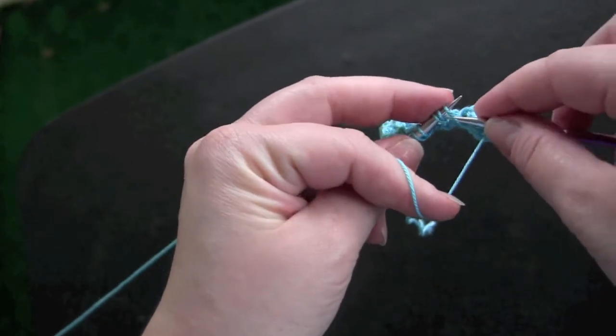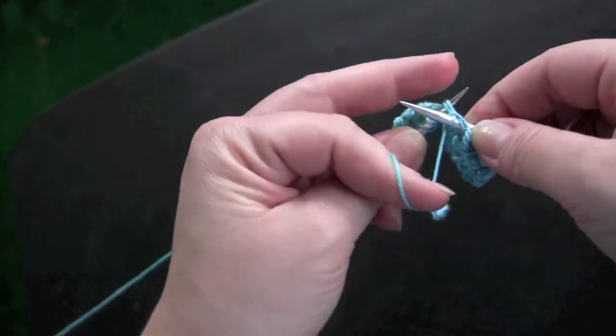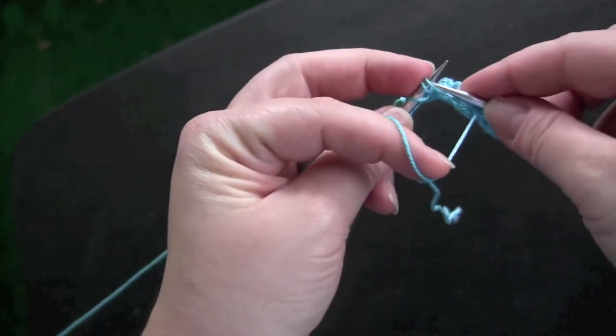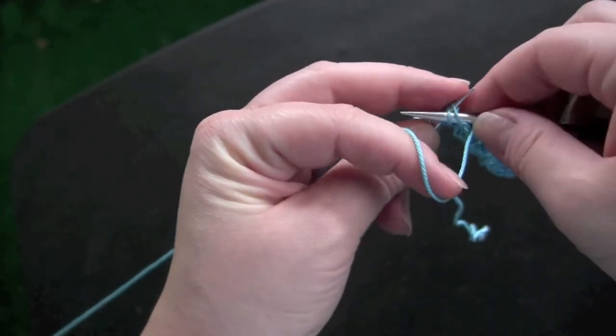I guess it may be more appropriate to say yarn around the needle, but anytime we're making a hole in our knitting, I just say yarn over.